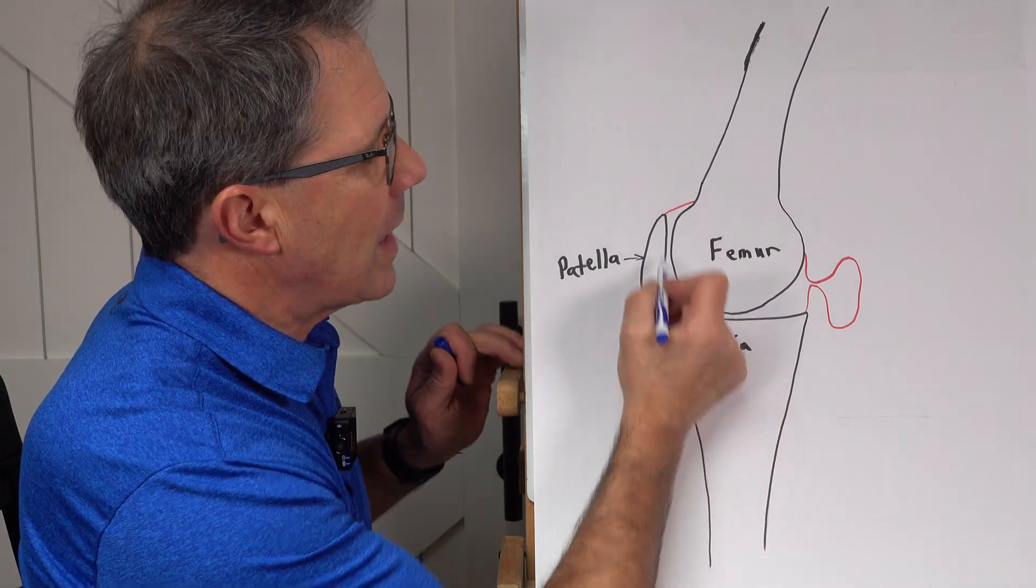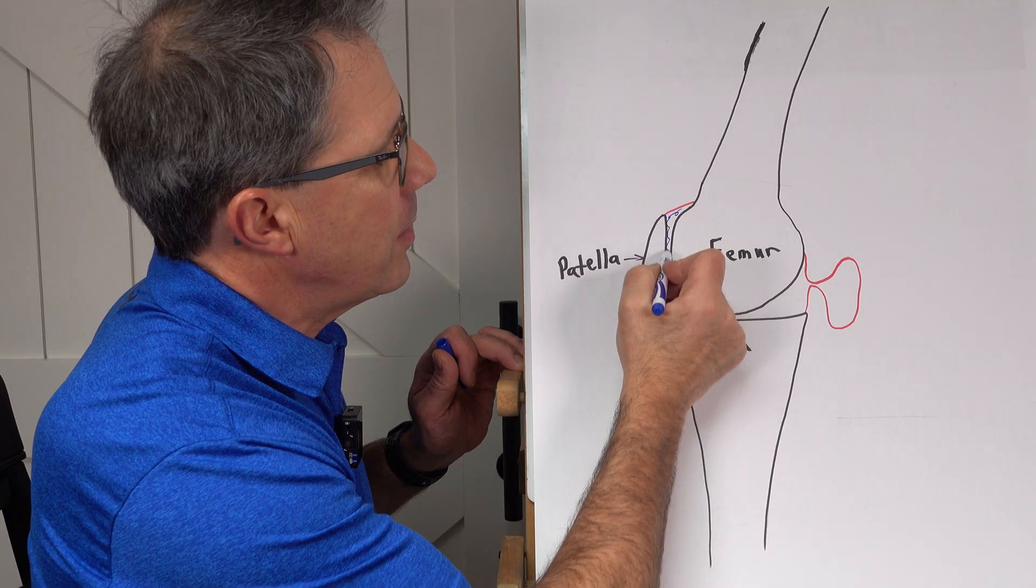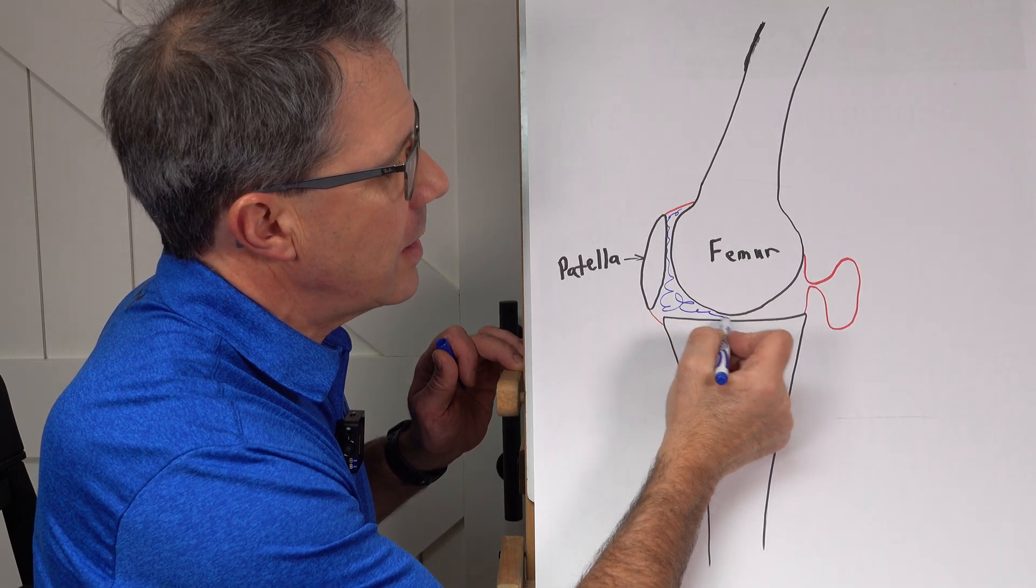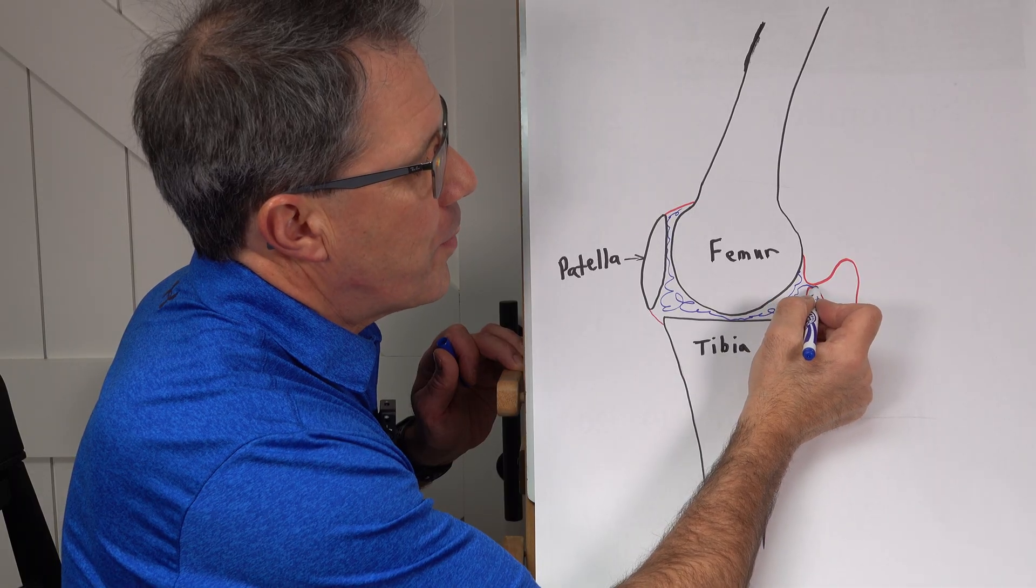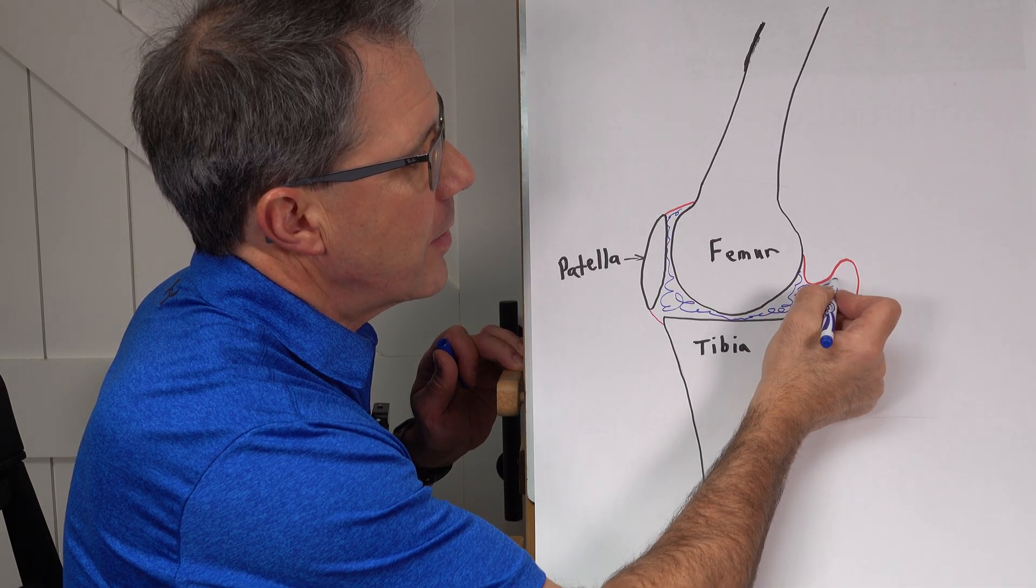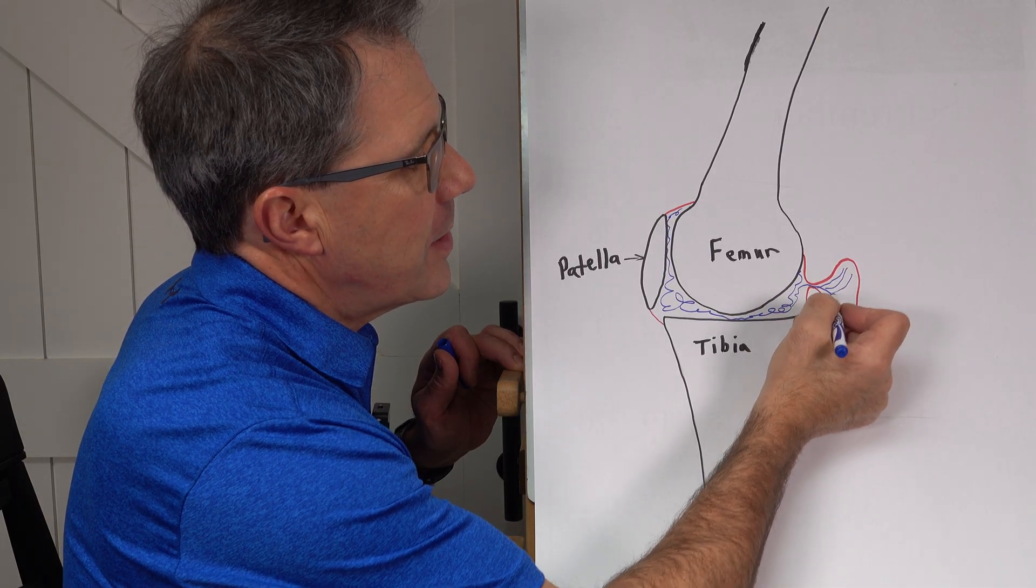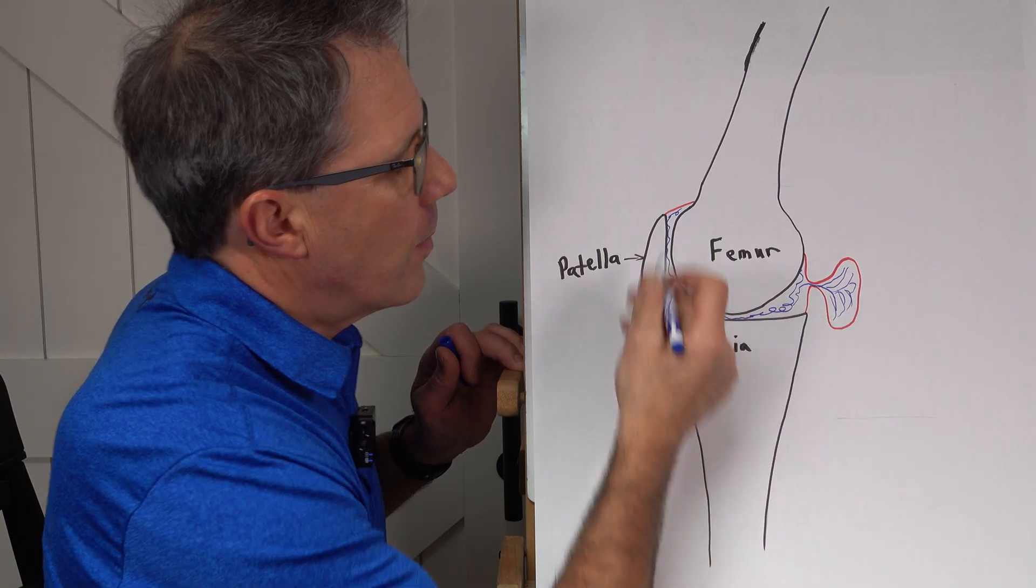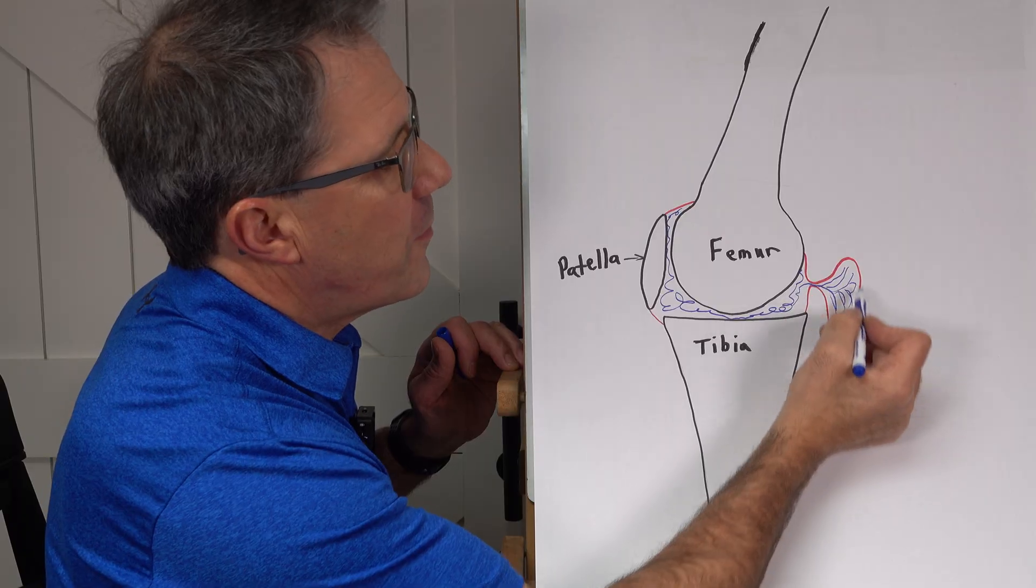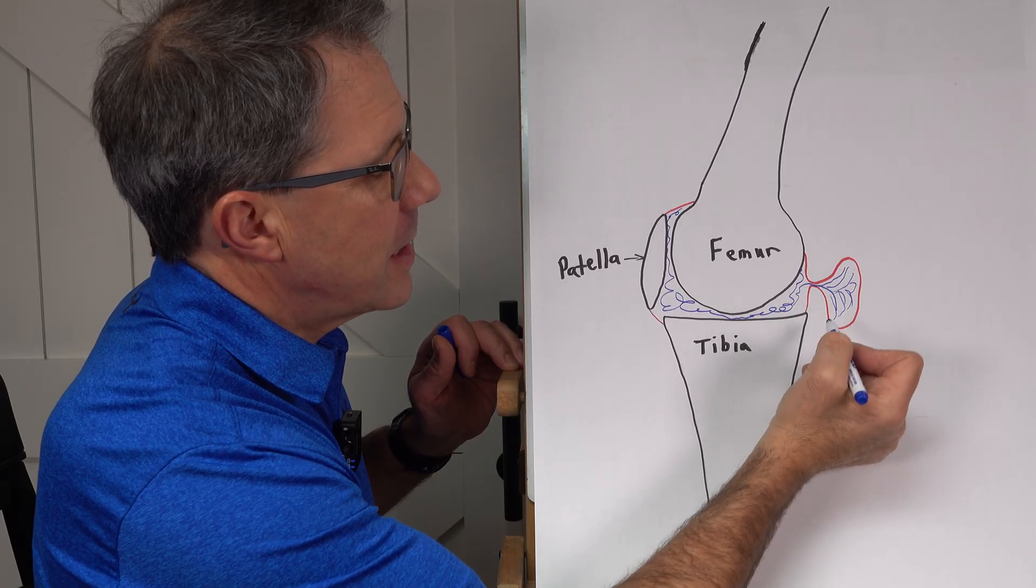And so what happens is that swelling that can occur anywhere here in around this joint can fill up and push into this area here and start to fill up this Baker's cyst or this popliteal cyst. The more swelling you have, the more filling you can have of this cyst.